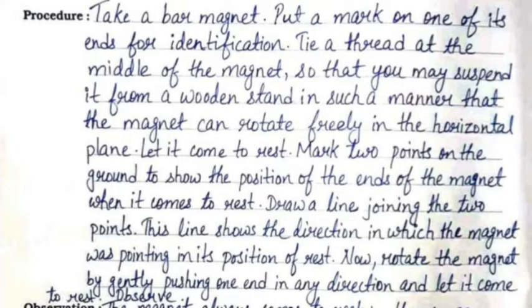Mark two points on the ground to show the position of the ends of the magnet when it comes to rest. Draw a line joining the two points. This line shows the direction in which the magnet was pointing in its position of rest. Now rotate the magnet by gently pushing one end in any direction and let it come to rest and observe.